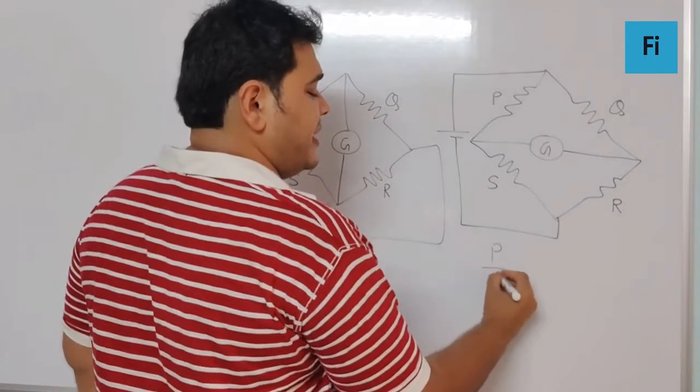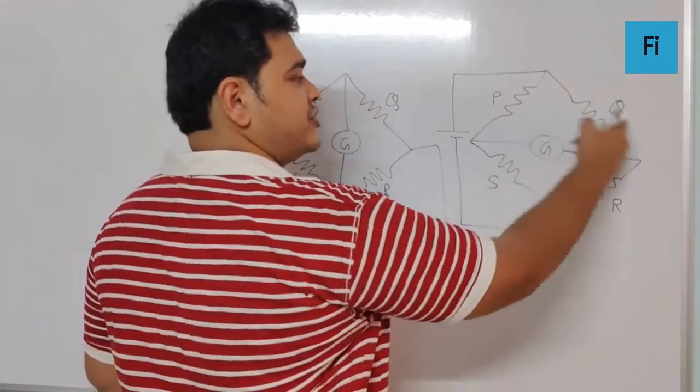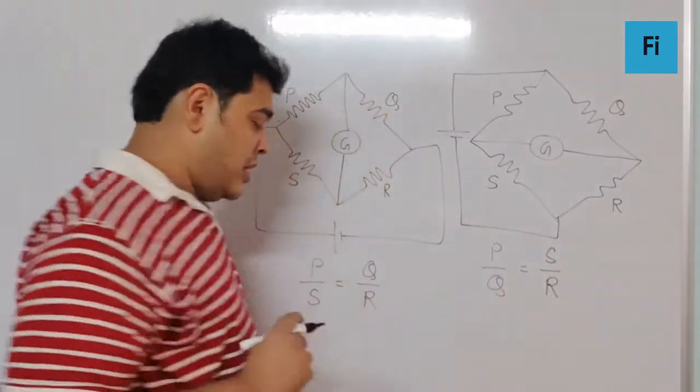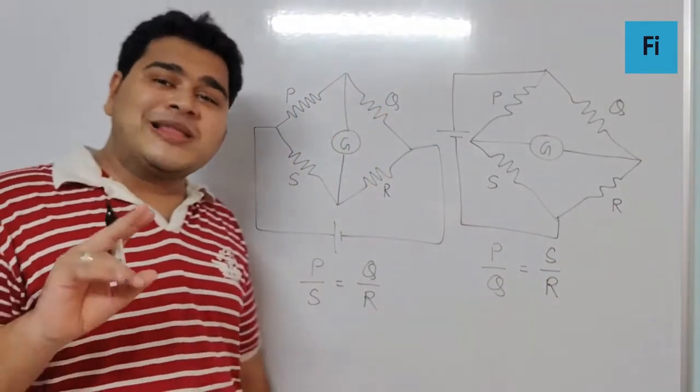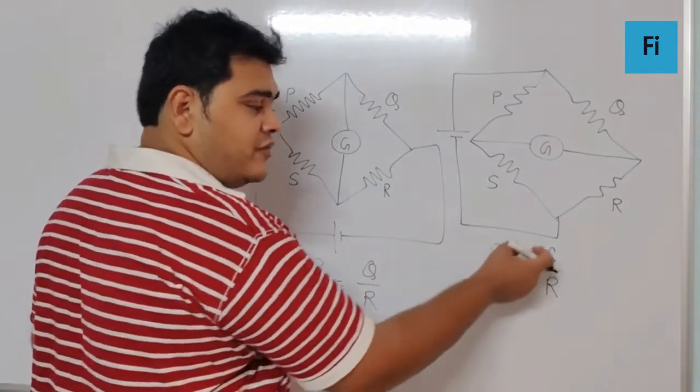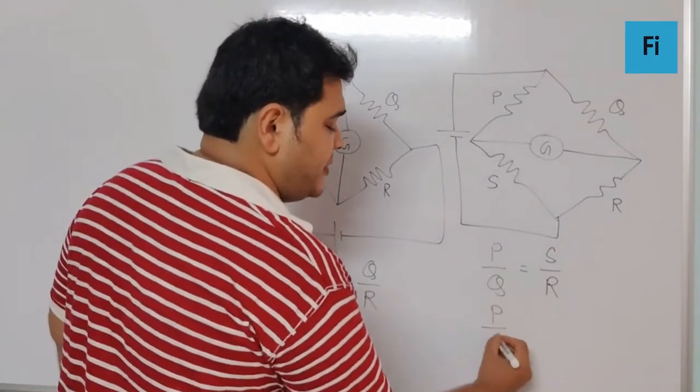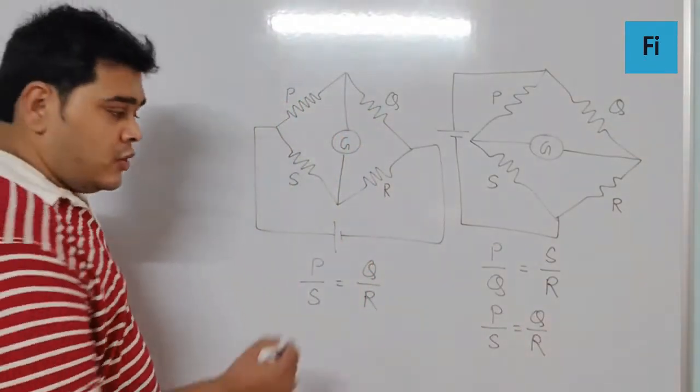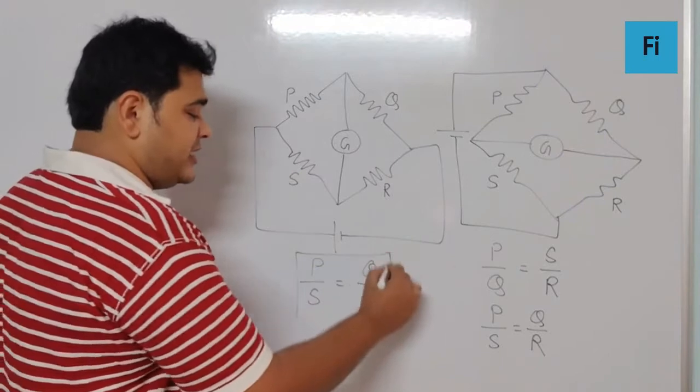So I can write over here: P by Q, this ratio is equal to this ratio S by R. Now if I try and apply componendo-dividendo, I can take S over here and Q over here, and I will have P by S is equal to Q by R.